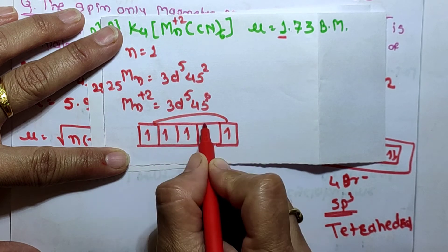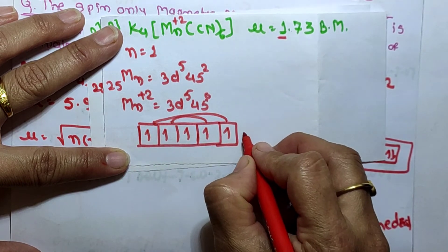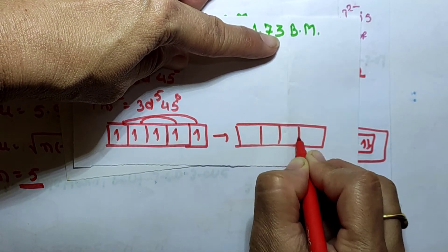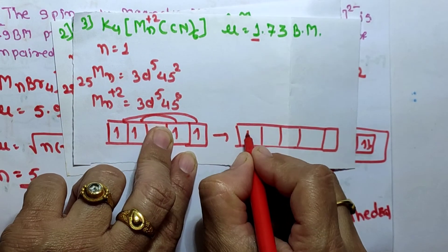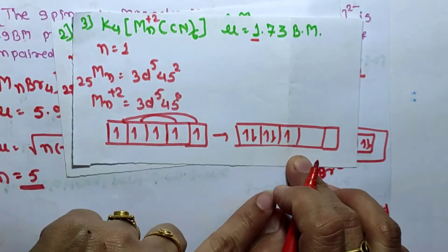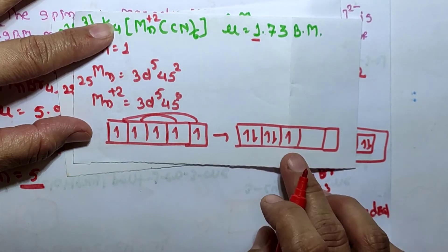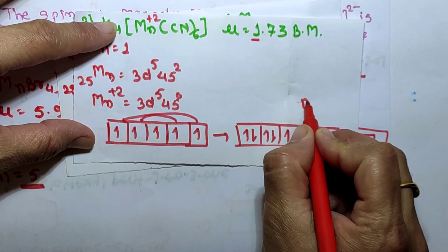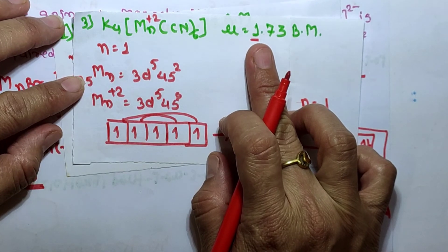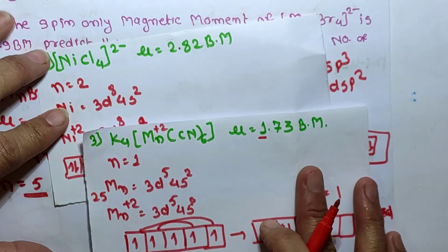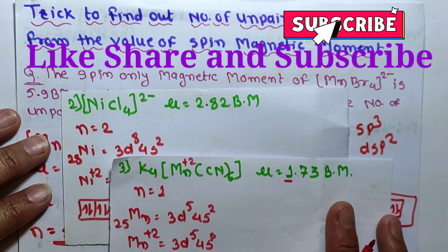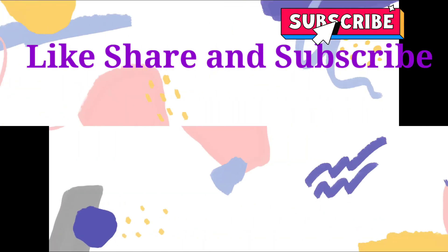Since CN⁻ is a strong field ligand, pairing formation occurs. The first electron pairs up, the second electron pairs up — after pairing, the configuration shows the electrons paired and only one electron remains unpaired. Hence the number of unpaired electrons is 1, which matches the spin magnetic moment of 1.73 BM. From the spin magnetic moment we can easily find the number of unpaired electrons. Please like, share, and subscribe to my YouTube channel. Thank you.